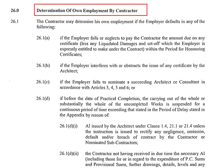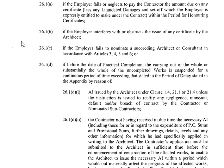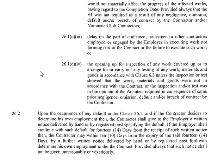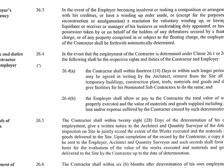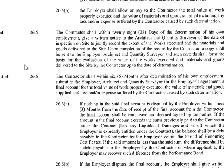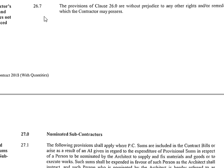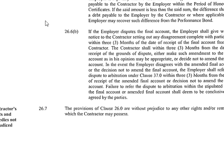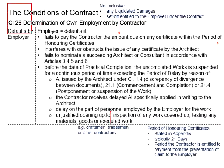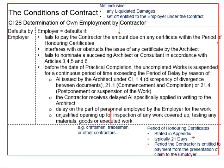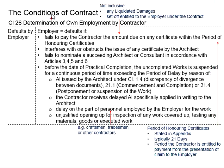Clause 26 is about the determinations of own employment by the contractor. You may refer to the PAN contract for the full statements here. The information is rather detailed, and there are seven sub-clauses. The relevant information is summarized in the slides here. You can consider this as an extension to Clause 25.